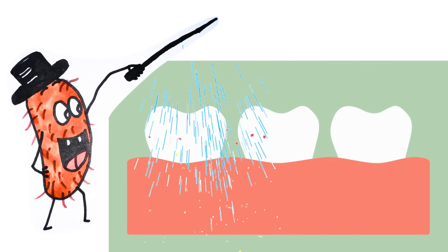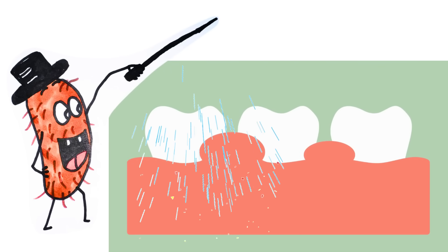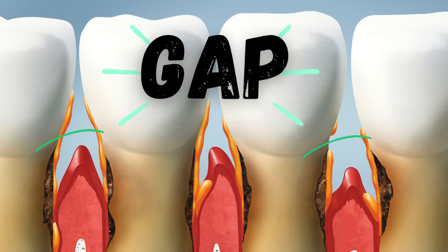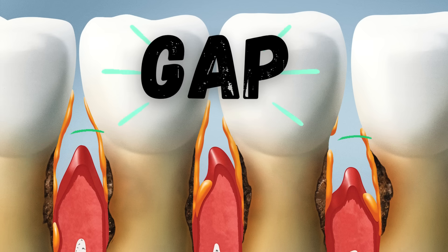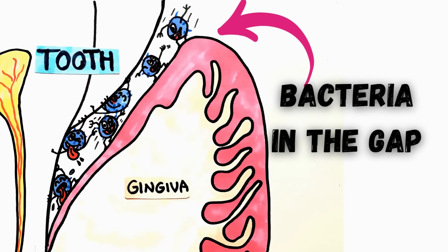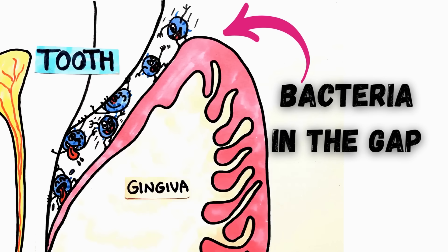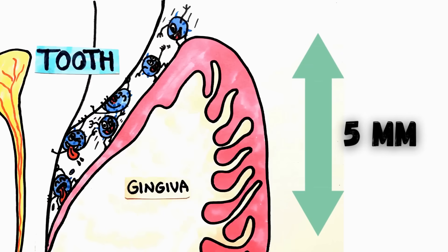This leads to swelling and redness of the gums. As the gums swell, a gap forms between them and the teeth, creating a vertical space for bacteria to migrate in. As bacteria settle within the gap, they continue forming tartar that breaks down the attachment of the gum to the tooth surface.